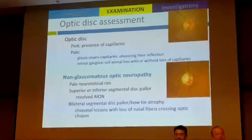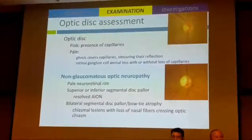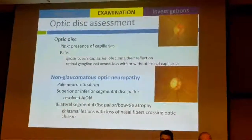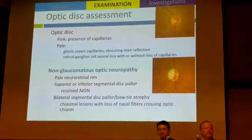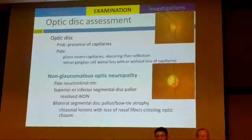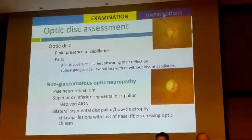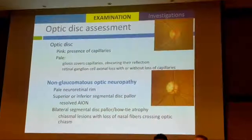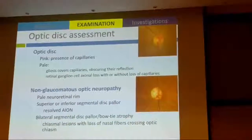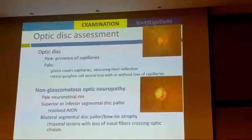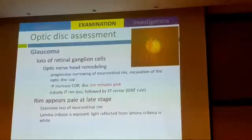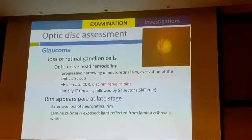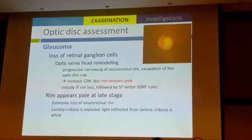Optic disc assessment is very important in distinguishing between glaucoma and non-glaucomatous optic neuropathy. Normally the rim is pink because of the presence of capillaries; with retrograde ganglion cell loss you get pallor. In non-glaucomatous optic neuropathy the key finding is a pale neuroretinal rim. In resolved NAION you may get superior or inferior segmental pallor, and bilateral segmental pallor or bowtie atrophy should prompt consideration of chiasmal lesions with bitemporal hemianopia. With glaucoma, you expect an increased cup-to-disc ratio with a pink rim, and typically initial inferotemporal rim loss followed by superotemporal sectors — violating the ISNT rule.